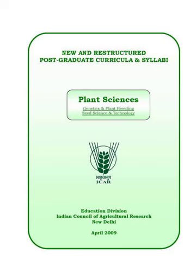Unit 5: Seed Storage. Seed storage: principal, purpose and types - short, medium and long-term storage. Factors affecting seed storage and role of moisture, temperature and relative humidity. Viability monographs, longevity of orthodox seed and recalcitrant seed. Seed deterioration: causes and methods of control, physiological, biochemical and molecular changes in seed aging.